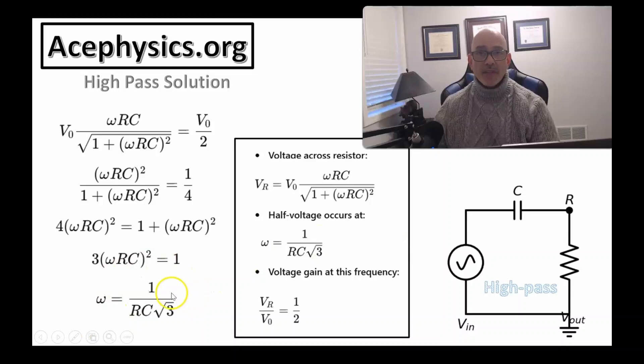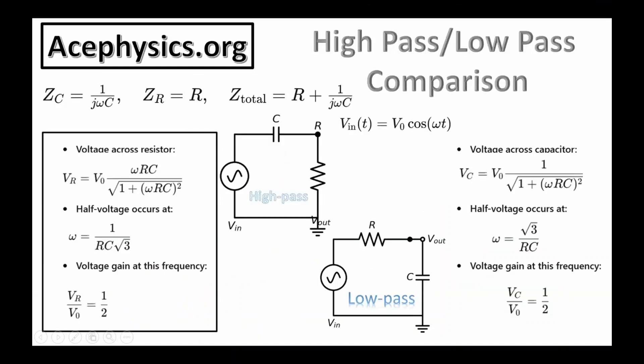In summary: a low-pass RC filter measures voltage across the capacitor. At low frequencies, the capacitor has high impedance so most voltage appears across it, allowing low frequencies to pass while high frequencies are attenuated as the capacitor's impedance decreases. A high-pass RC filter measures voltage across the resistor. At high frequencies, the capacitor has low impedance so most voltage drops across the resistor. In both cases, voltage and current are out of phase because the capacitor stores and releases charge, allowing positive current to flow even when the power supply voltage is zero or negative.